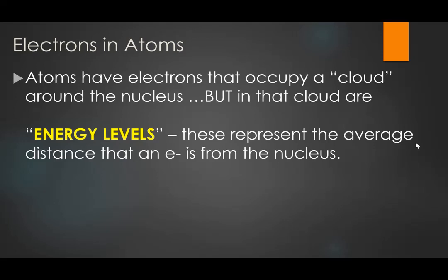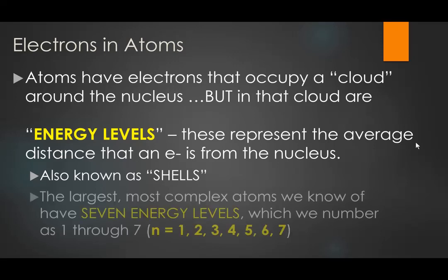Electrons all occupy a cloud, but it's not just a random cloud — it's an organized cloud with a semi-understood structure. Some people call those electron shells. I don't like that word because it implies a rigid hardness, like a shell on a turtle. Electrons aren't in rigid, hard positions so much as they're at those distances. There are seven energy levels, numbered 1 through 7, described specifically as n equals 1 through 7.